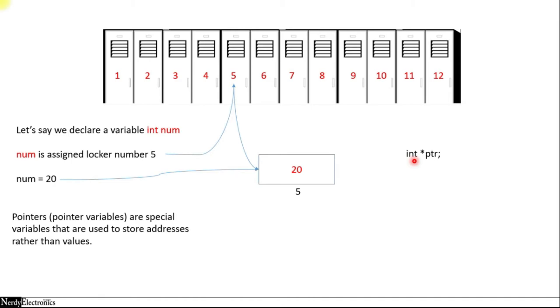The integer here signifies that we are going to store the address of an integer. Similarly, there can be character, float, double — anything. The data type of the pointer must be the same as the data type of the variable whose address we are going to store.